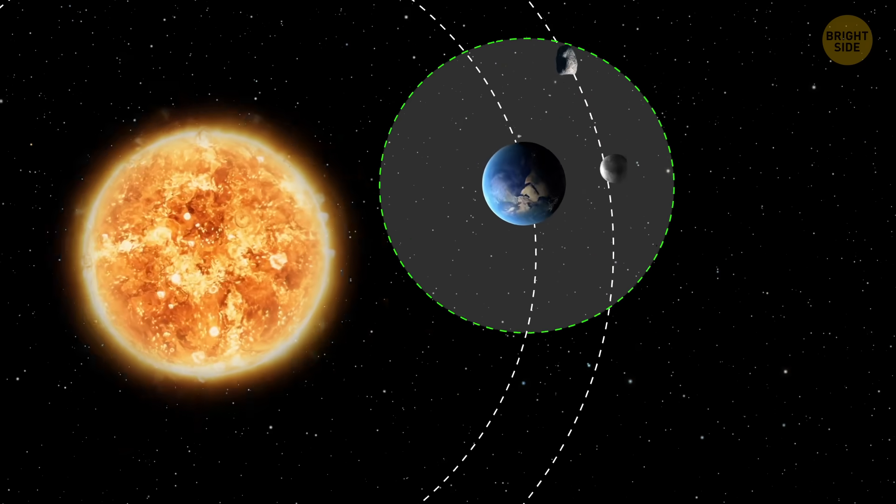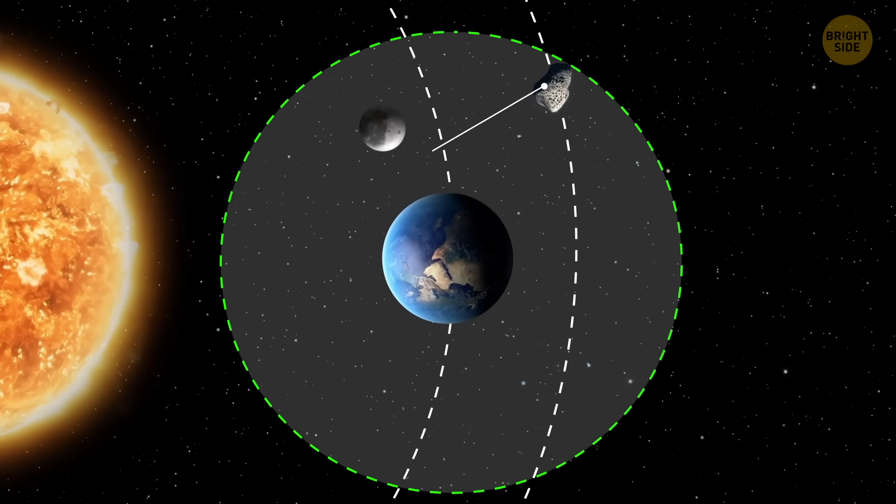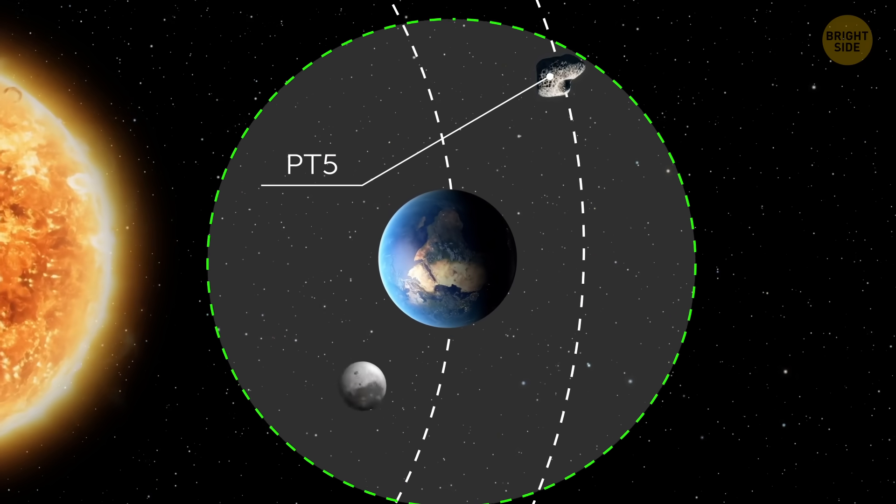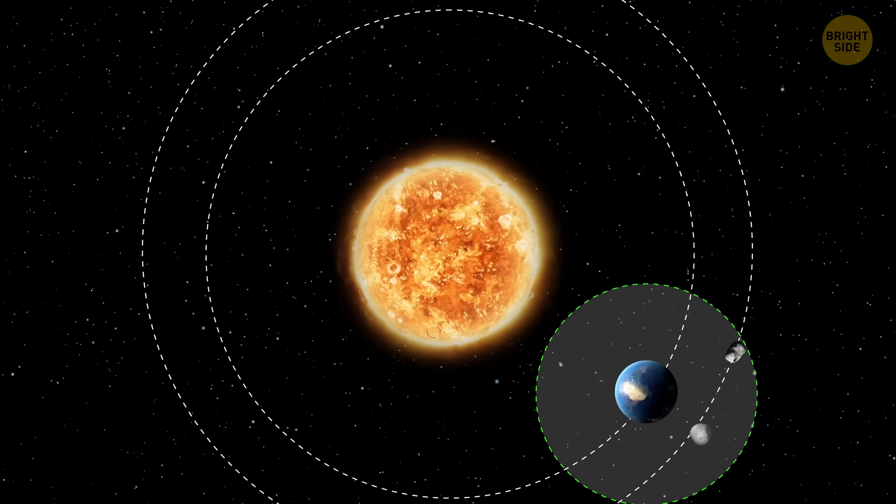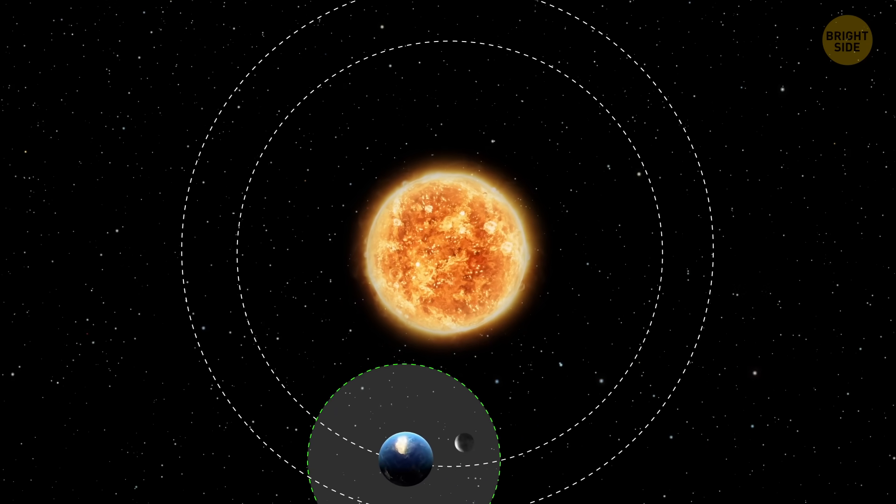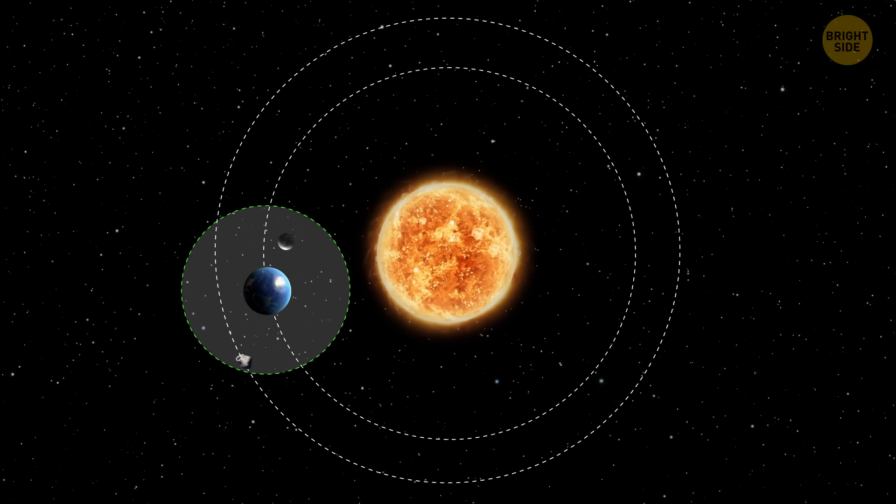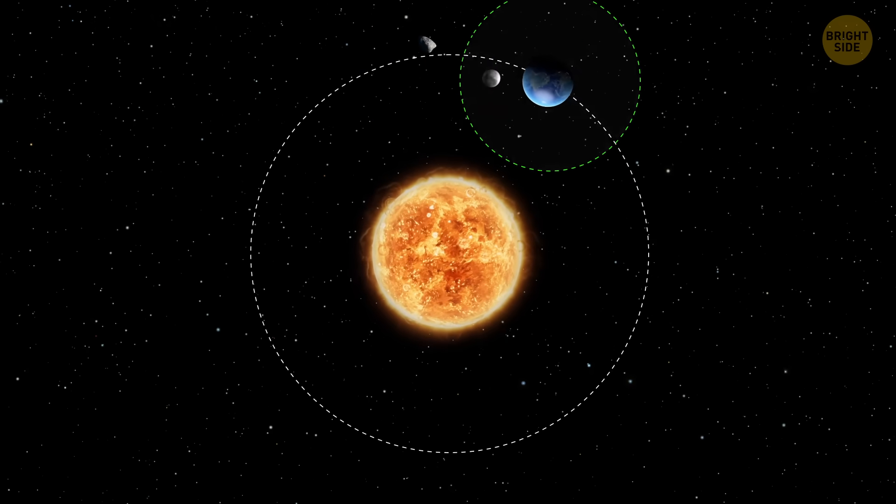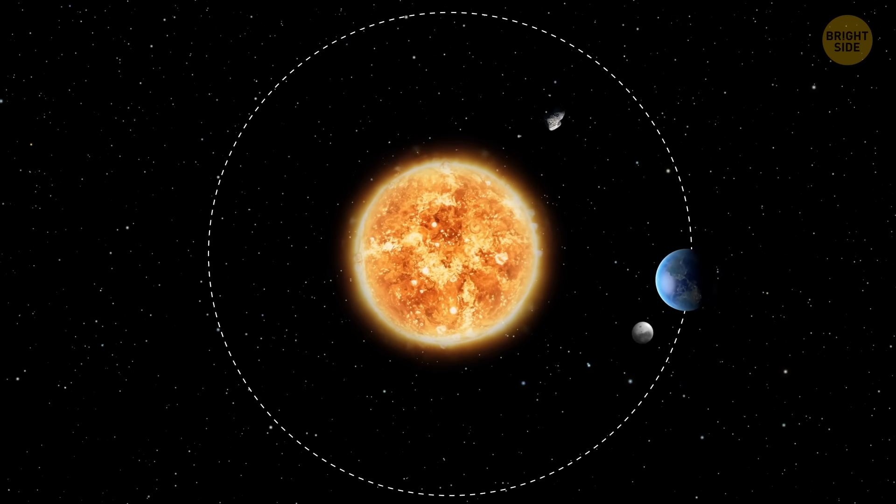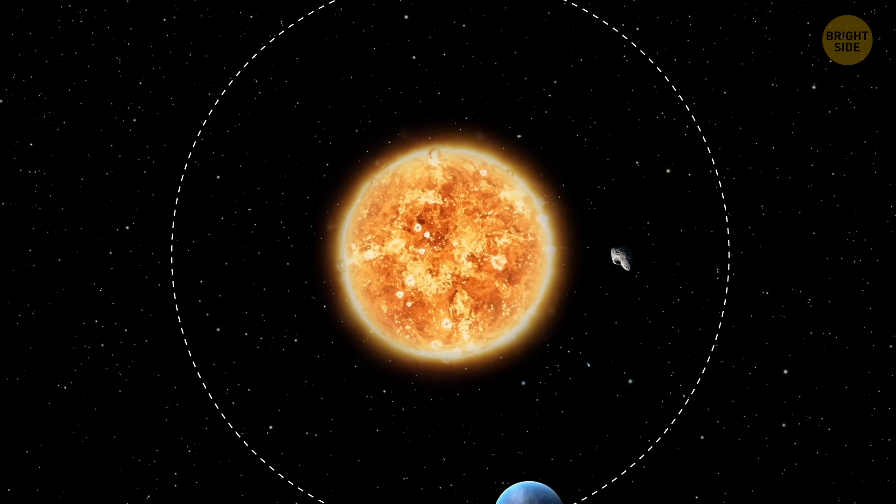This is exactly what happened to PT5, which was our legit satellite for two months in 2024. It dipped inside the Hill Sphere, and Earth's gravity took over. Once it happened, this object became known as a mini-moon. But because it was small and moving fast, it eventually slipped back out of that bubble, and the Sun's gravity pulled it away again.